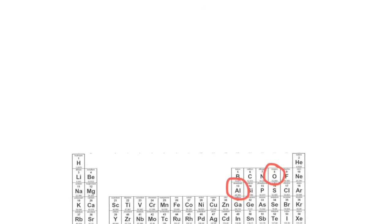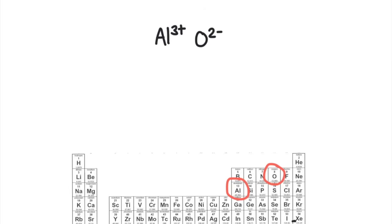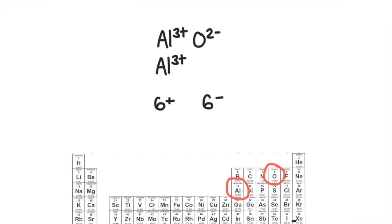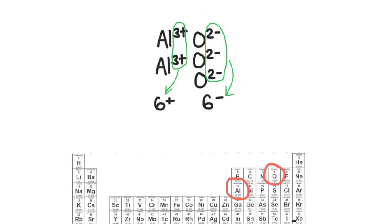Here's a tough one: aluminum and oxygen. Aluminum has a 3+ charge, and oxide has a 2− charge. How will these balance? The lowest common multiple of three and two is six. So if I had two aluminum ions, I would have a total of 6+. And if I had three oxide ions, I would have a total of 6−. So two aluminums and three oxides will stick together to form the compound Al₂O₃, aluminum oxide.